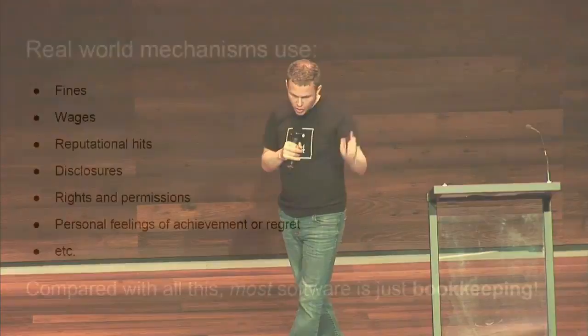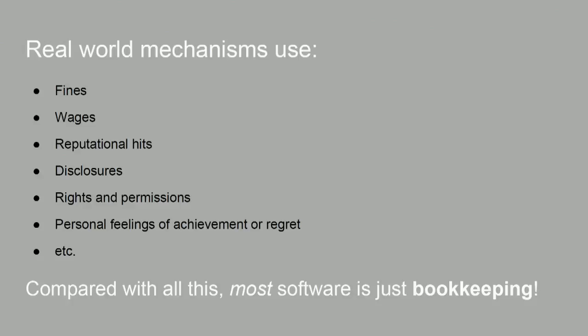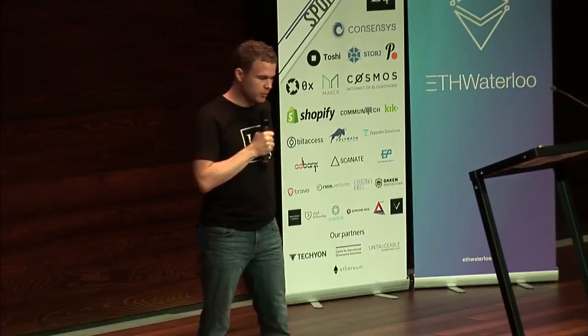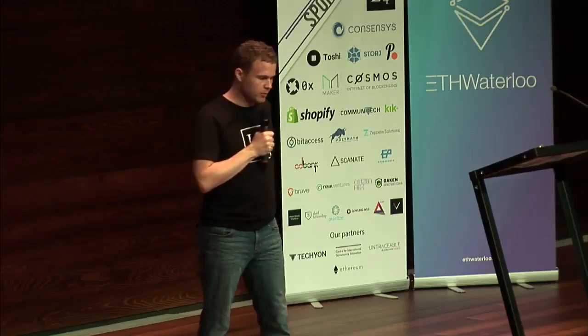The problem is that software alone, compared to all of this, is mostly just bookkeeping. If you look at what the Uber software actually does, it doesn't actually do any of the things we're talking about. Stars in and of themselves don't really mean anything — the only thing that stars mean is that when a human being looks at a star, they say more stars is good, less stars is bad. Someone at Uber sits there and says this driver's ratings are getting pretty low, I think we're going to fire them. That's still a human being solving a problem. This is where blockchain software can be really different — because blockchains are software that can directly enact consequences.